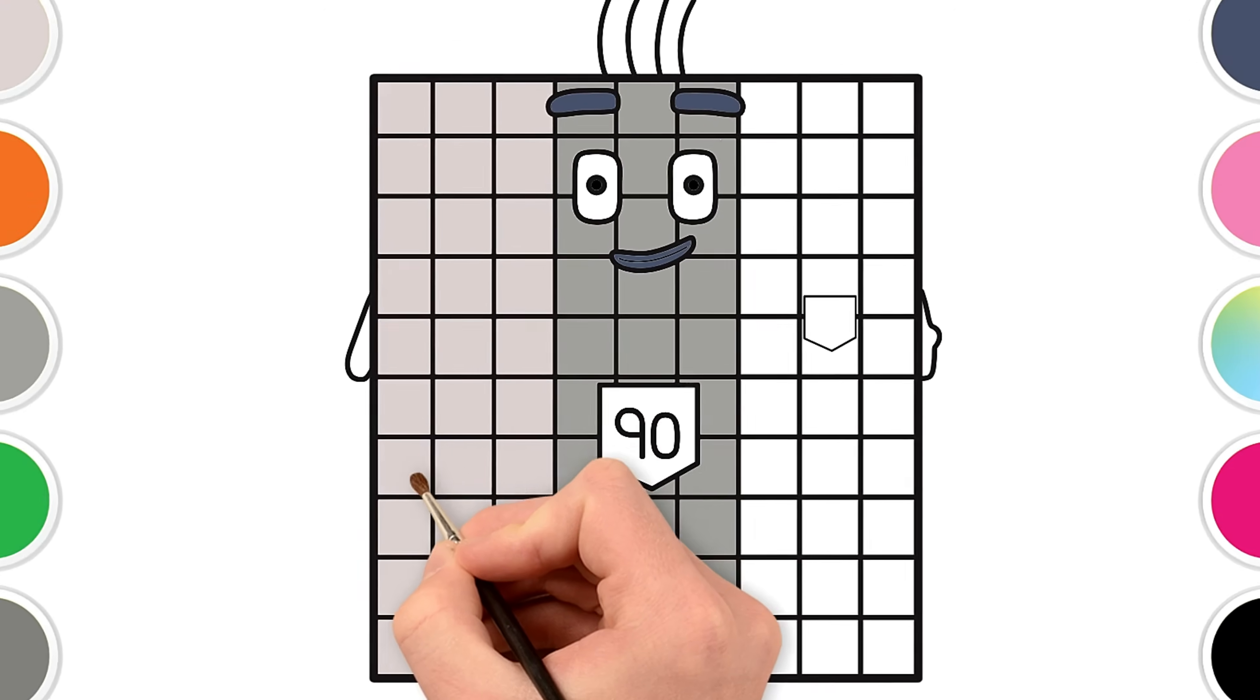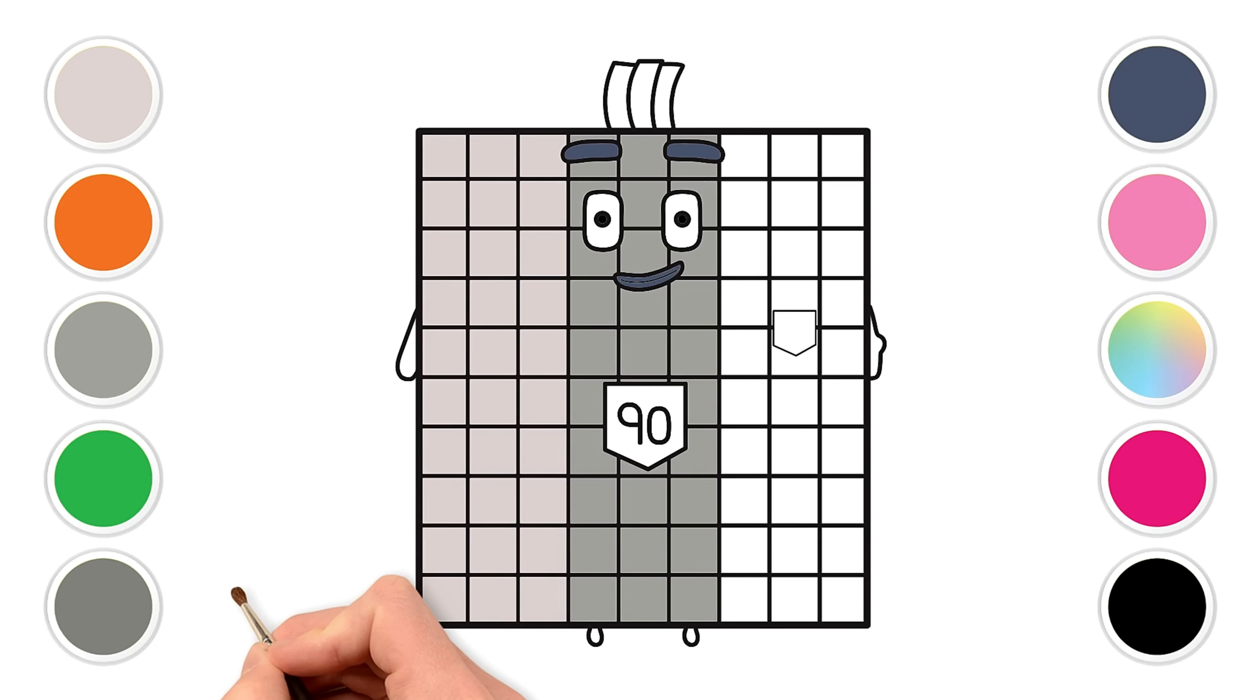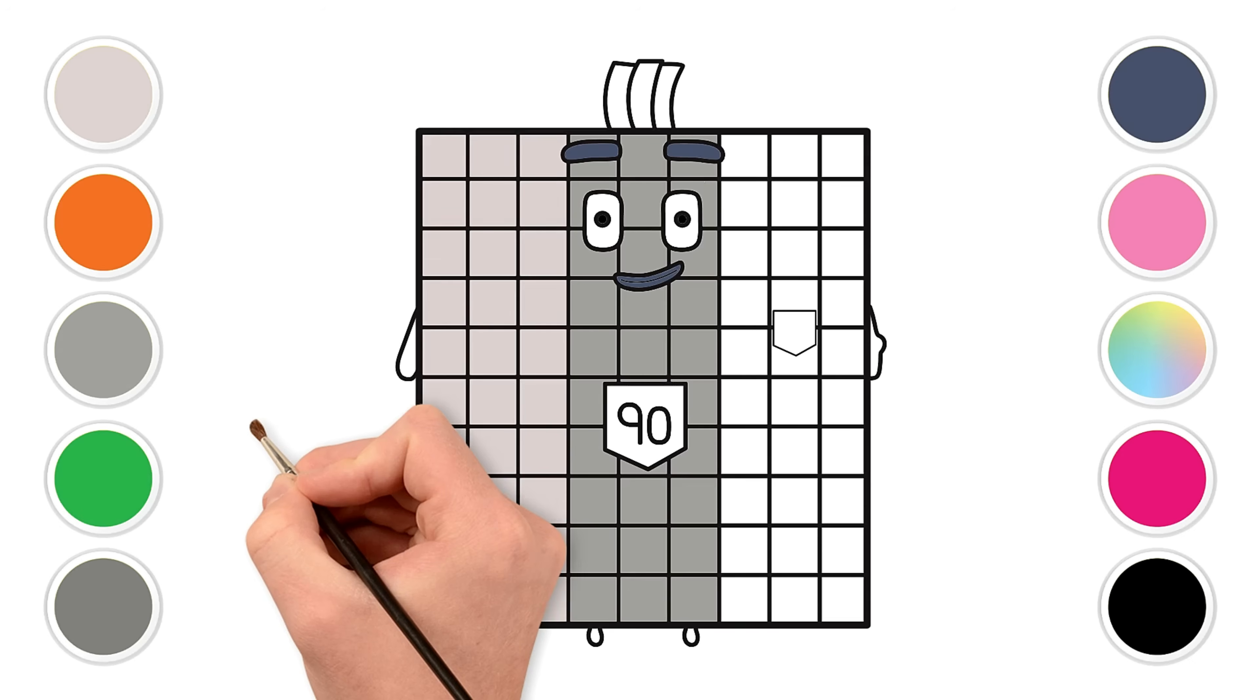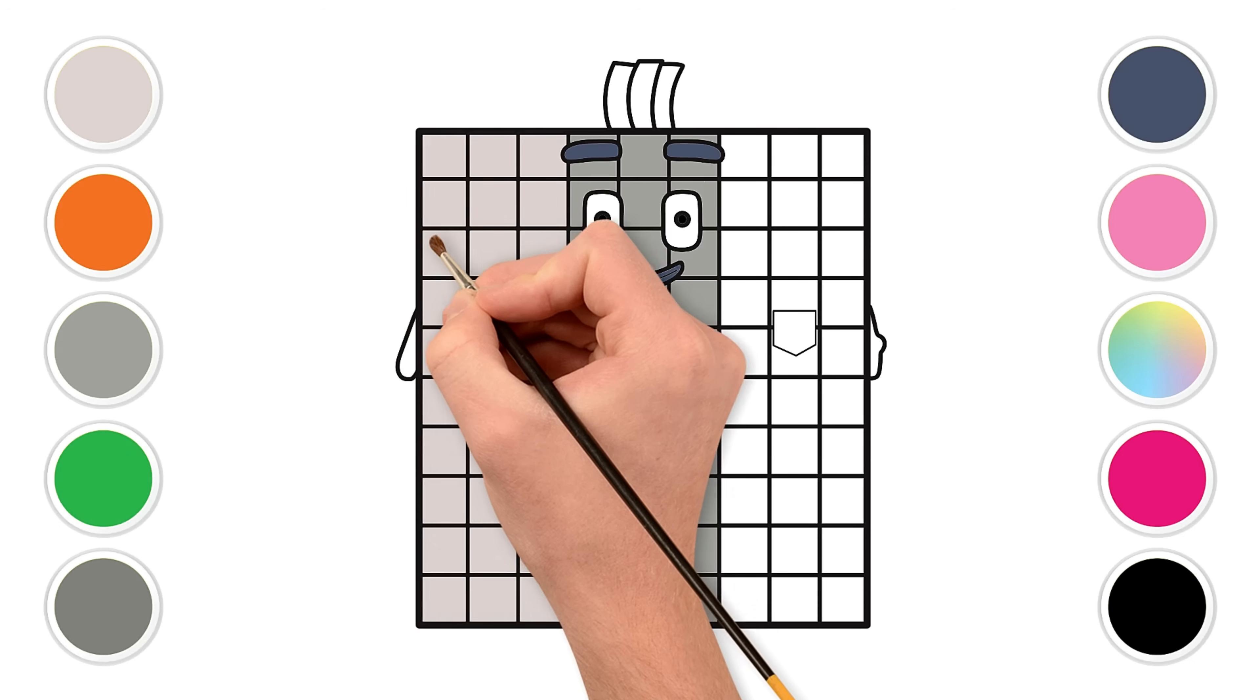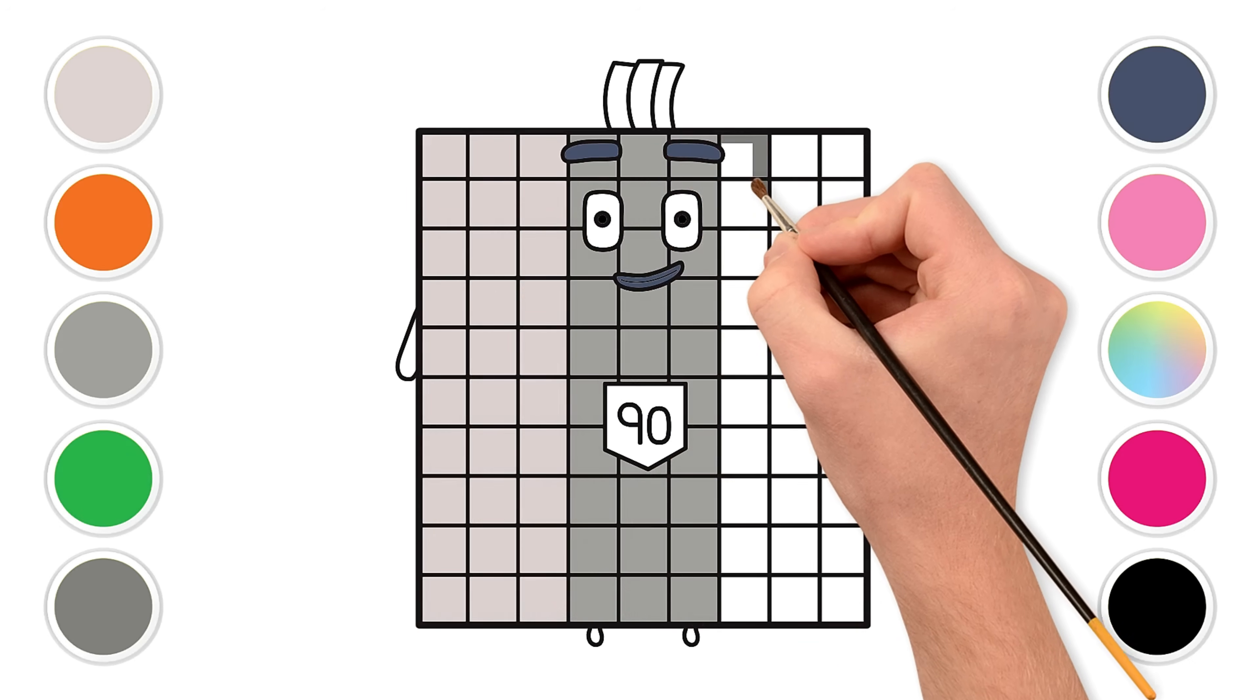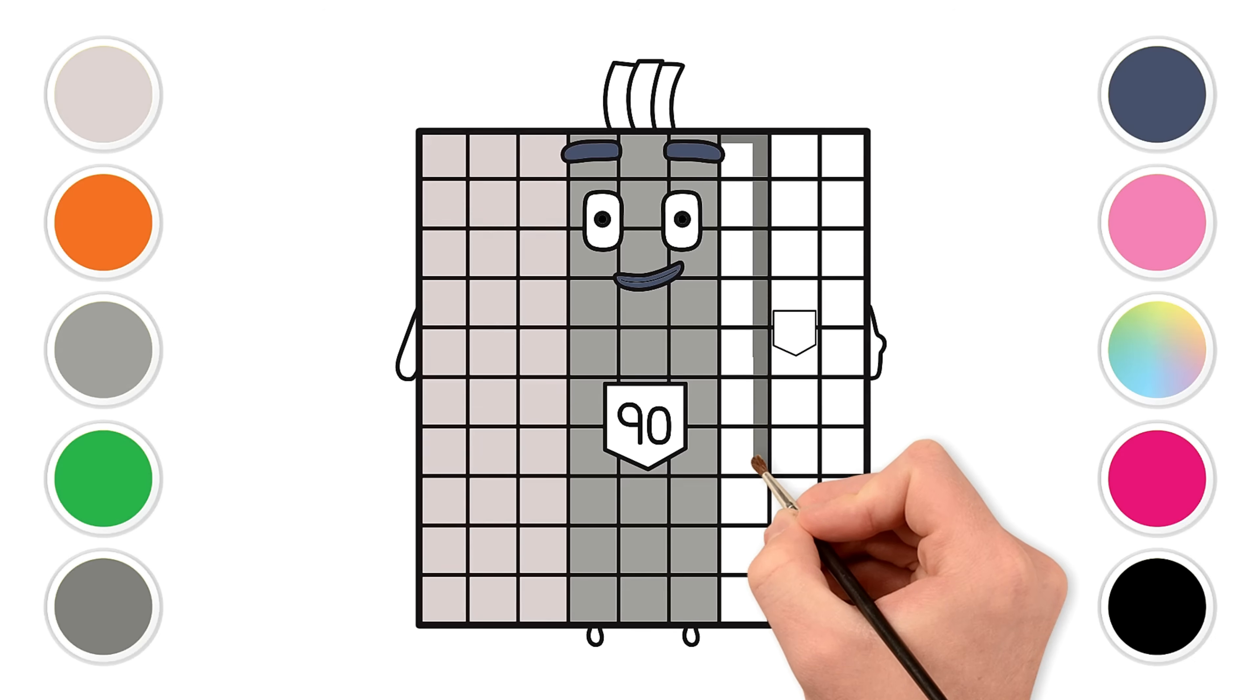And finally, color the last three columns with dark gray. D-A-R-K-G-R-A-Y. Dark gray. All these shades of gray make me look very sharp. How many groups of ten are in 90? Let's count one more time.